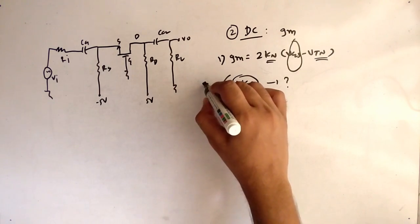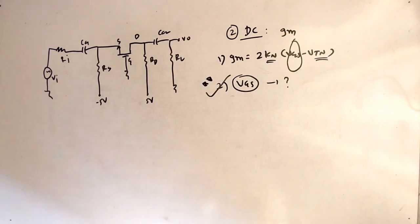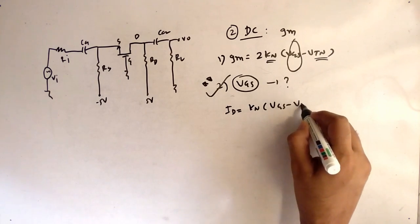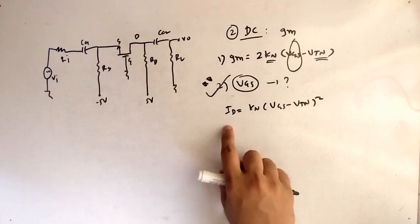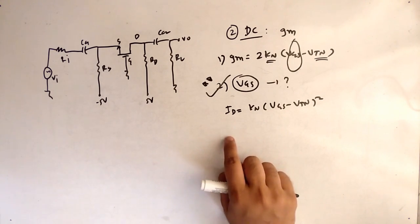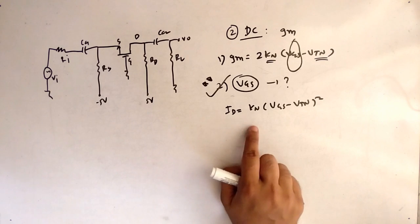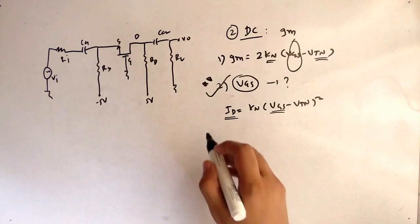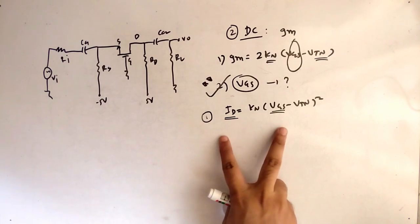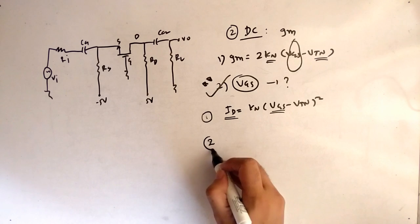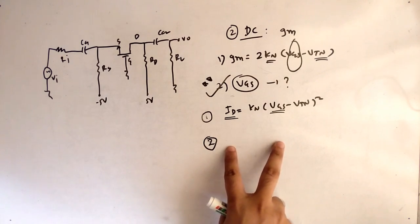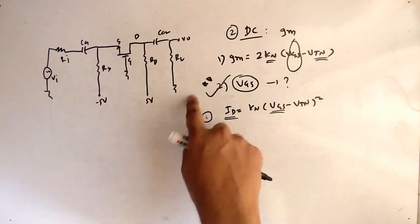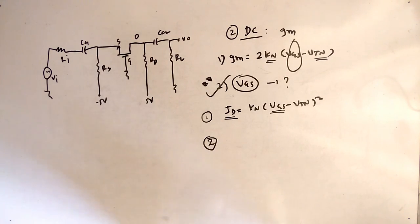The first step is: Id = kn × (Vgs - Vtn)², which is the equation for Id when the MOSFET is in the saturation region. Here Id is unknown and Vgs is unknown, so we have one equation with two unknowns. We need a second equation between Vgs and Id so we can solve simultaneously to get both values.